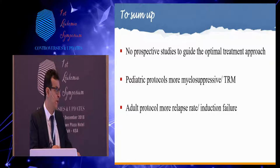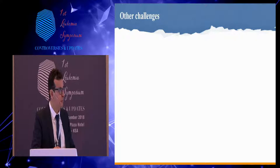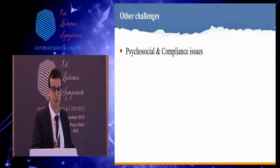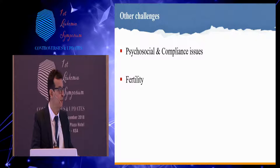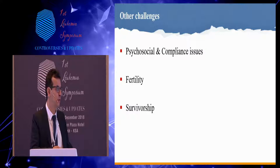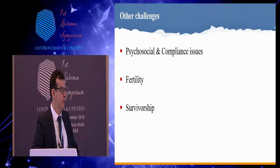Choosing the right protocol is not the only challenge for this age group. There are definitely other factors to consider. Psychosocial and compliance issues are a big concern for AYA compared to children, and we see this very clearly in our setting. Fertility must also be addressed, because remember, almost 50% of those patients will survive, and when they survive, they have a long life ahead of them. We have to pay attention to survivorship and balance the risks of different chemotherapy, secondary malignancy, and toxicity whenever we choose a regimen.